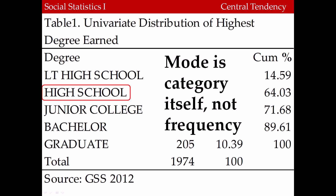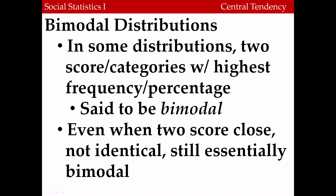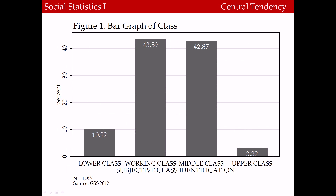How would we interpret this statistic? We could say that most people have only a high school degree. In some distributions, two or more categories have the highest frequency or percentage, in which case the distribution is said to be bimodal. Even when two scores are close but not identical, we would still say that they are essentially bimodal.